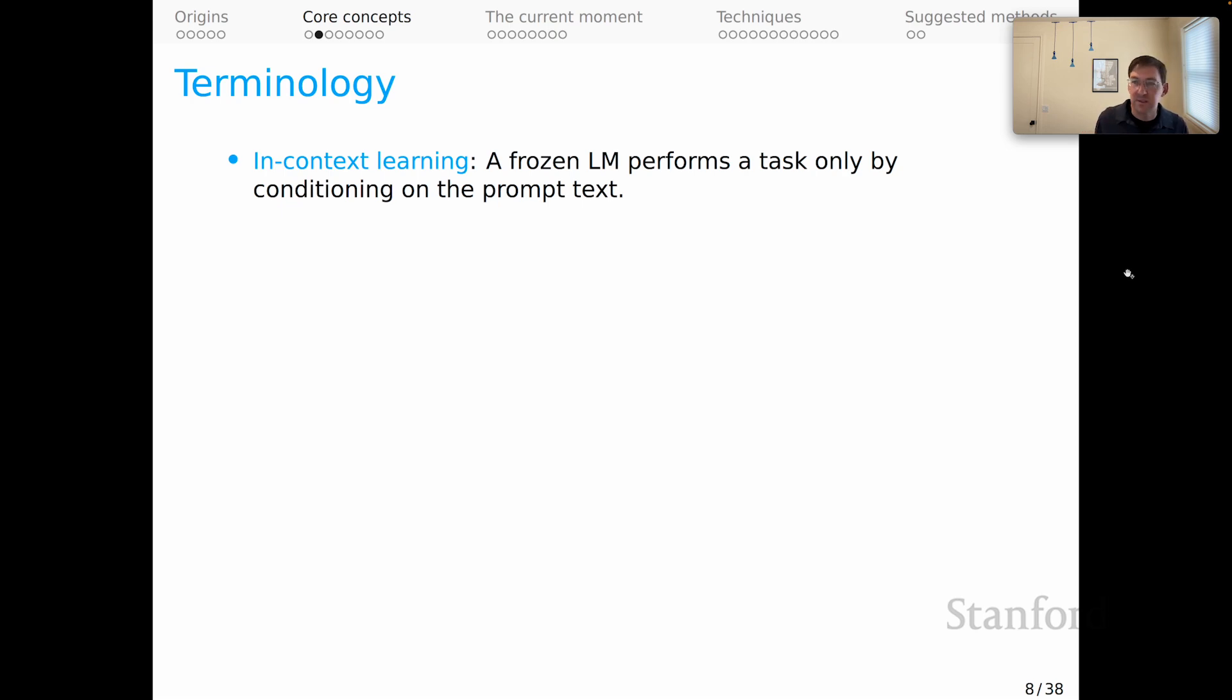Let's start with in-context learning. When I say in-context learning, I mean a frozen language model performs a task only by conditioning on the prompt text. It's frozen, that is, there are no gradient updates. The only mechanism we have for learning is that we input some text, and that puts the model in a temporary state that we hope is useful for having it generate things that we regard as useful for our task.